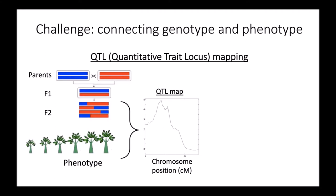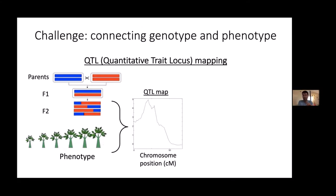You start with two parents that differ in the trait, cross them to get an F1 hybrid, then cross those F1 hybrids to get the F2 generation, which will be diverse because it undergoes recombination. You generate a few hundred F2s to have enough power. In each F2 individual you do genotyping across the whole genome as well as phenotyping for your trait of interest, then analyze these together to look for correlations — represented in a QTL map — looking for peaks that implicate certain regions.